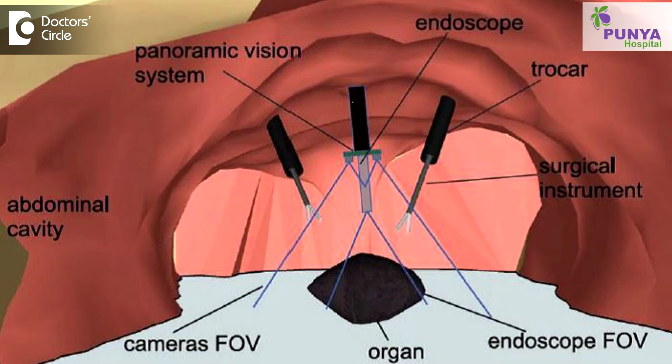Laparoscopic surgery means laparoscopy — earlier we were calling that as laparotomy. Laparotomy is cutting open the abdomen to see what is inside. Laparoscopy is looking into the abdomen with the help of a laparoscope.